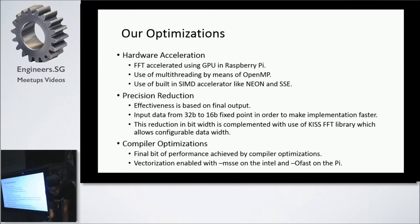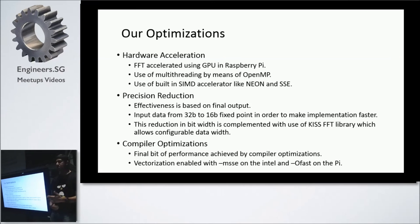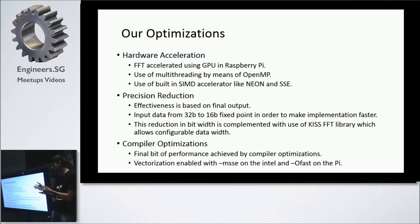The final performance gain was achieved through compiler optimization flags — you can refer to our full paper for details. With these three optimizations combined, we achieve a significant benefit in terms of processing time. Once you achieve a boost in processing time, you have lesser energy consumed per process, and this is how we save energy compared to Batista's approach.